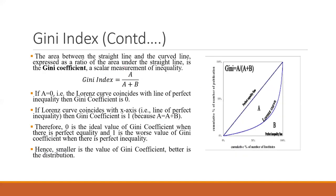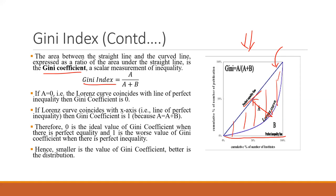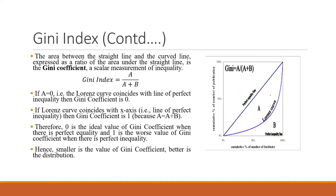The Gini coefficient comes from this graph. The straight line is called the perfect equality line. Area A is between the Lorenz curve and the equality line. Area B is the area of the Lorenz curve and the perfect inequality line. If there is 100% inequality, the Lorenz curve lies along the x-axis — that is the perfect inequality line.